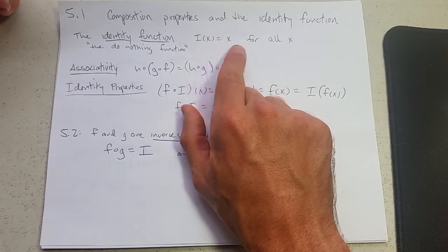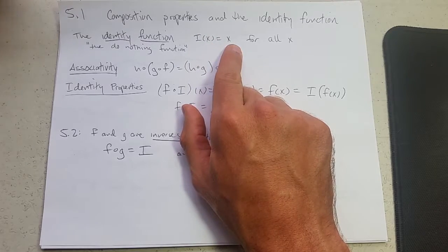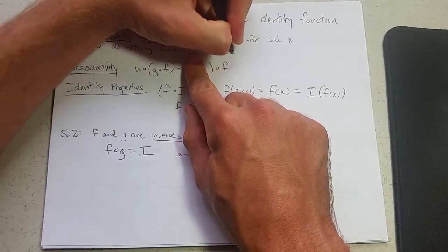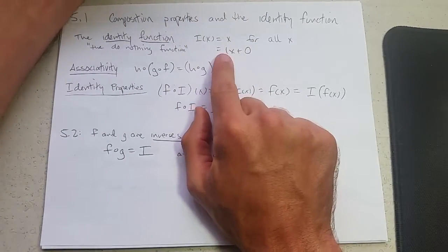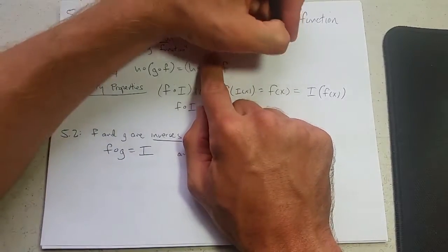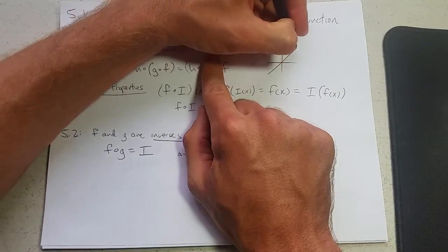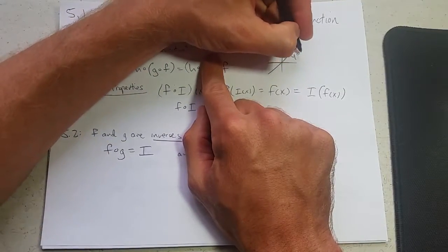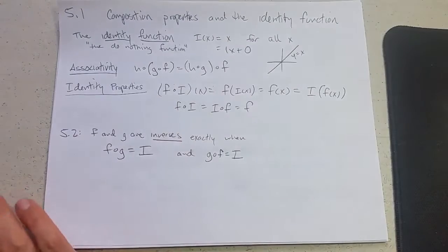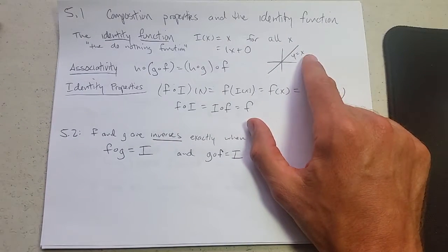This function right here, if you graphed it, if I wrote it out as a linear function, it has a slope of one and a y-intercept of zero. If you graph it out, it'll look like this. y equals x is the equation. So this is the identity function graph.